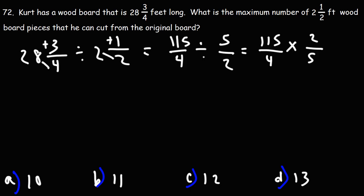115 divided by 5 is 23. So we can replace 115 with 23 times 5. 4 is 2 times 2. So we can cancel a 5 on top and a 5 on the bottom, and a 2 on the bottom and a 2 on top.